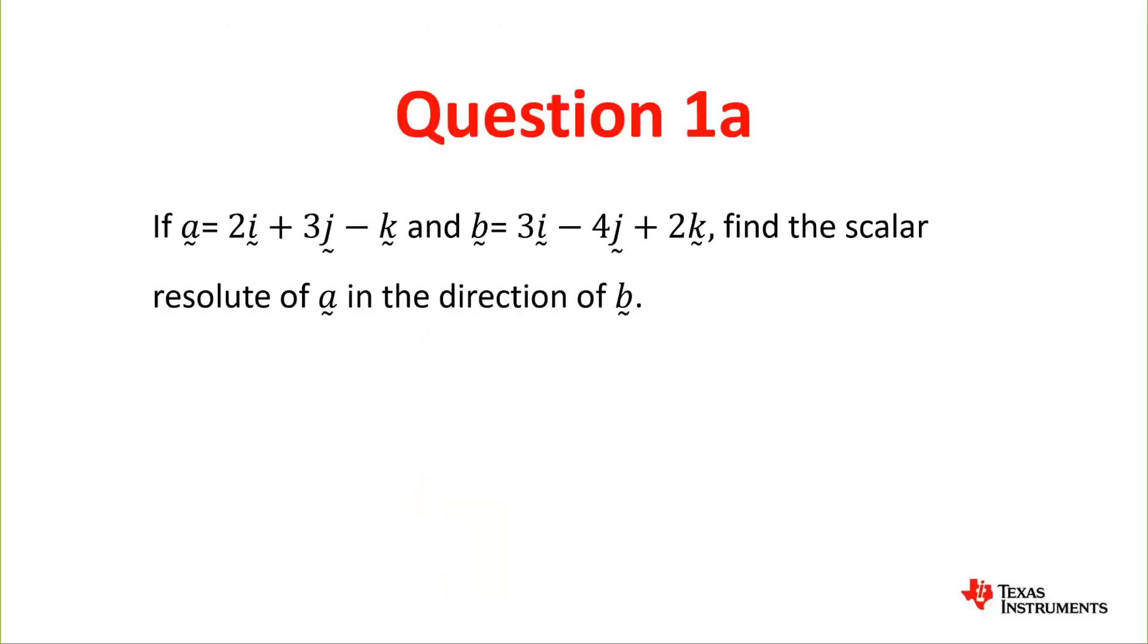In this video we'll be looking at scalar and vector resolutes. Question 1a: If a equals 2i plus 3j minus k and b equals 3i minus 4j plus 2k, find the scalar resolute of a in the direction of b.